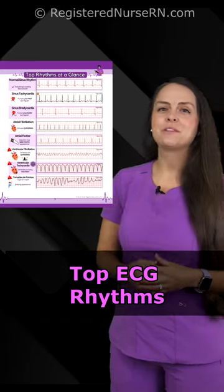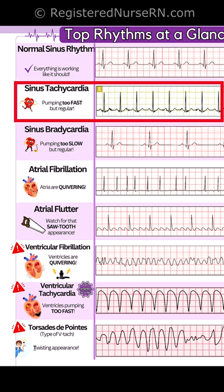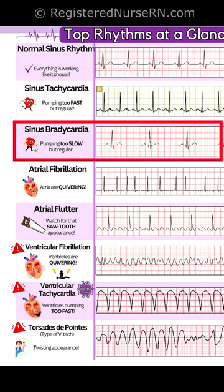Here are some top ECG rhythms you want to know. First up is normal sinus rhythm — everything is working like it should. Sinus tachycardia: the heart's pumping too fast but regular. Sinus bradycardia: the heart's pumping too slow but regular.